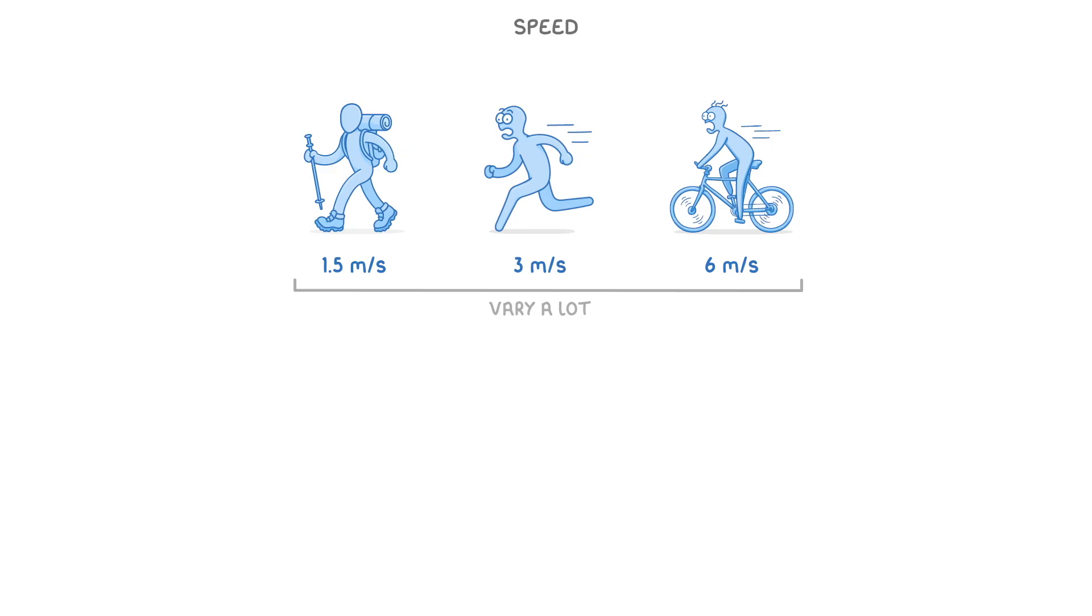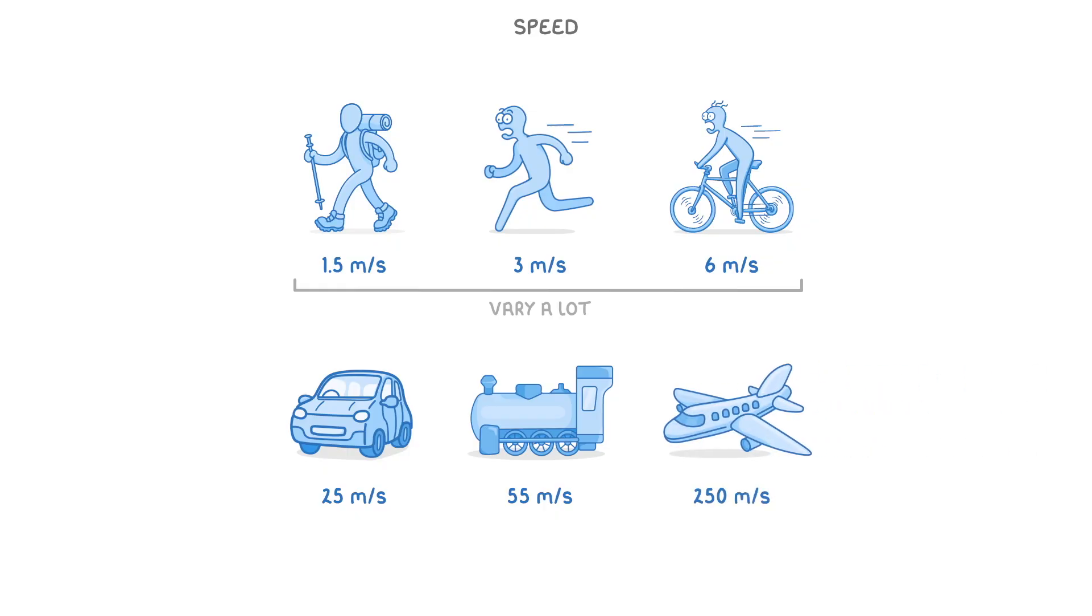Then for vehicles, a car on the main road might travel around 25 metres per second, while a fast train could travel 55 metres per second, and planes can exceed 250 metres per second.